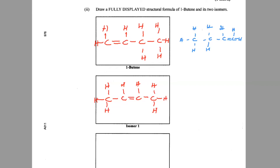Now we want to do isomer two. I'm going to use the one I did in blue up top to illustrate. We're going to let everything remain, but we're going to cut off this methyl group — that CH3 group — and trade places with a hydrogen. Let's call the carbons one, two, and three. We're going to take the methyl group and trade places with the hydrogen, and that will give us a new form with the same molecular formula of C4H8, but with atoms arranged differently in space.